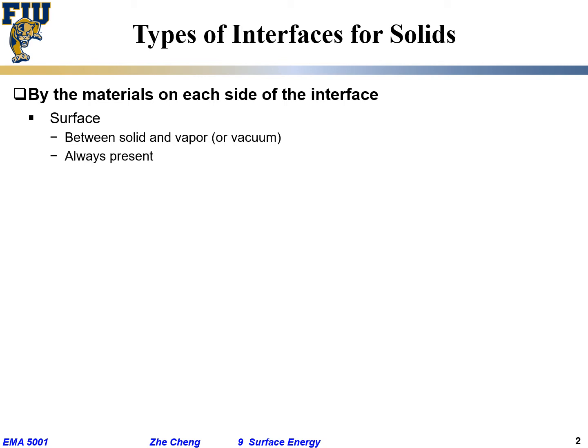That's the boundary between the solid material and the vacuum or gas phase — that's the surface. The unique feature is that if we are dealing with practical material, it is always present. You cannot find a material that doesn't have a surface. We are not living in a mathematical world; we live in a practical world. Everything has a boundary, has a surface. Surface energy matters in phenomena such as vaporization — going from solid into gas.